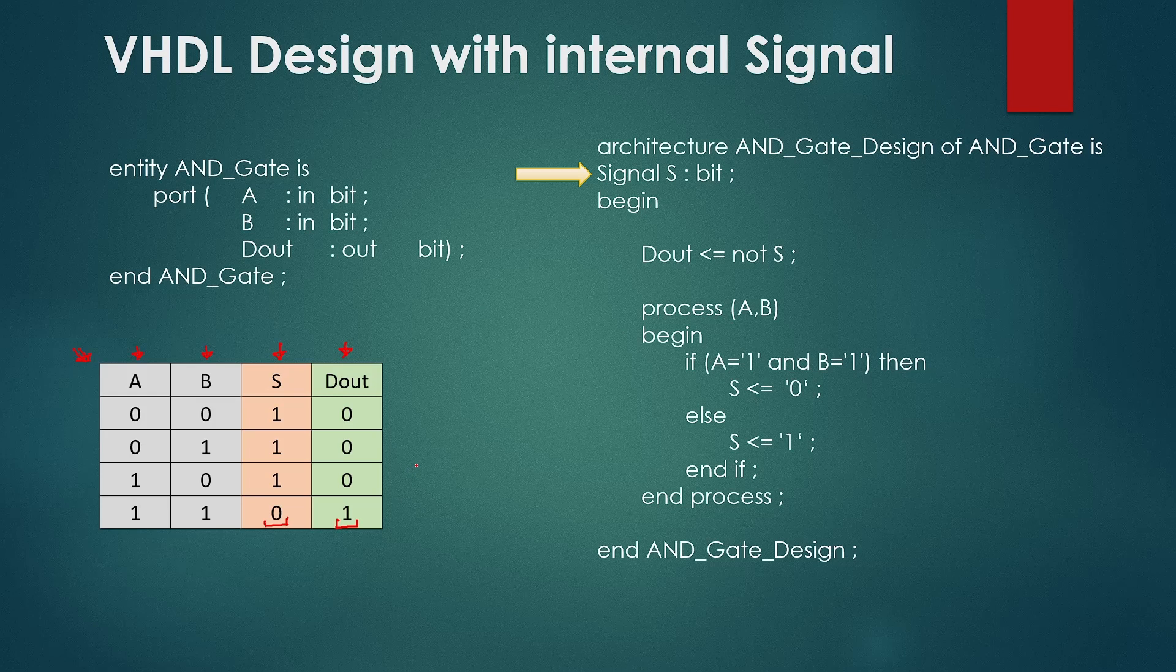Now think a bit about the structure of the logical design which we may get from the synthesizer tool on this description we have written here in this architecture. If you want keep a pause here and spare some time to think before continuing. Let me give a hint that the sequential statements in the process are describing a NAND gate with inputs A and B. And the computed result goes to internal signal S. And then the output of the internal signal S is wired up with the NOT gate. And the output of the NOT gate is the output of our schematic which is D out.